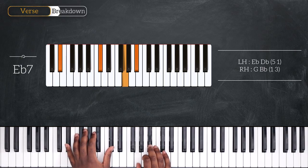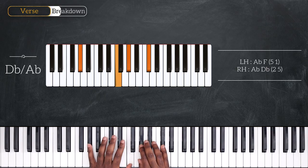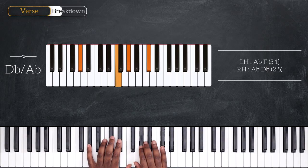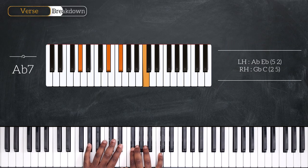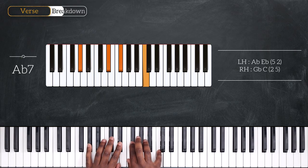Moving up to Db over Ab. That's Ab and F. We have Ab and Db. Resolving to Ab7. Now Ab and Eb. Gb and C on top.